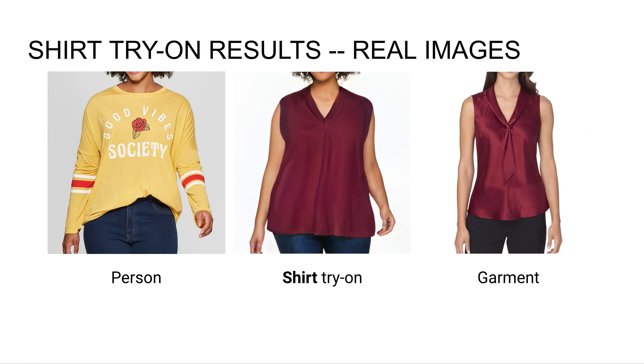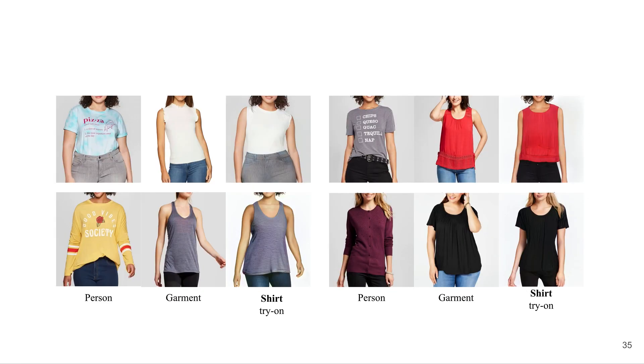However, you can see a couple of details are lost in projection. We leave better projection for future work. However, we show we still outperform current state-of-the-art try-on methods on real images with projection as is. Here I show a few more examples of try-on on real images. Again, you can see we're able to change the sleeve length, capture the color and shape of the shirt, all while preserving the identity of the person.